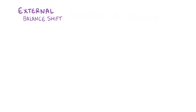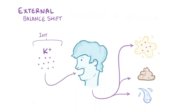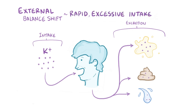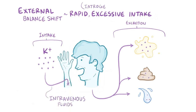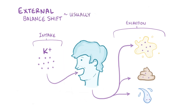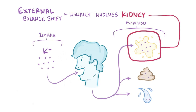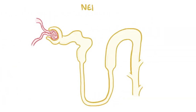Moving on to external potassium balance shifts resulting in hyperkalemia, which has to do with potassium intake and excretion. Simply taking in too much potassium can lead to hyperkalemia, but this would typically be from rapid, excessive infusion of potassium into the bloodstream, like in patients receiving intravenous fluids — an iatrogenic cause, meaning it results from a medical treatment or procedure. Most other cases have to do with the kidneys and their ability to regulate what stays in the blood and gets excreted into the urine, through the processes of filtration, reabsorption, and secretion in the nephron.